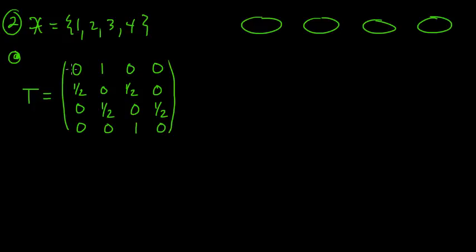When you're at state one, you always have to go to two — with probability one. When you're at two, you can go left or right with probability one-half each way, and same thing for three. And then when you're at four, you have to go back to three. So that's what this says.